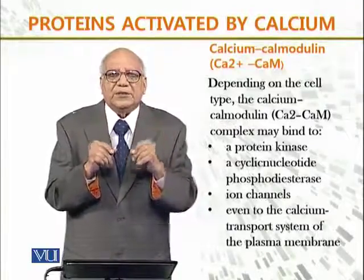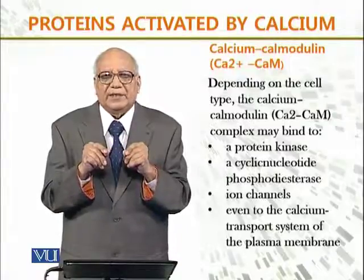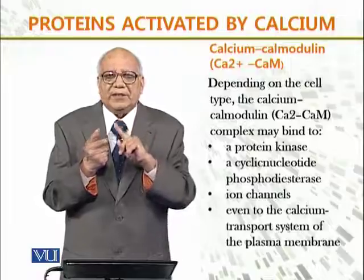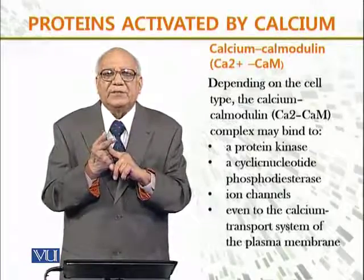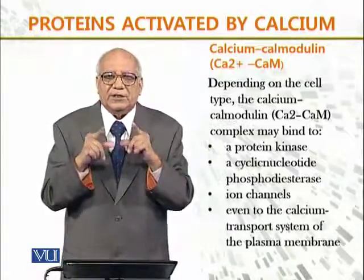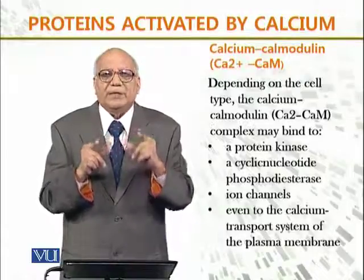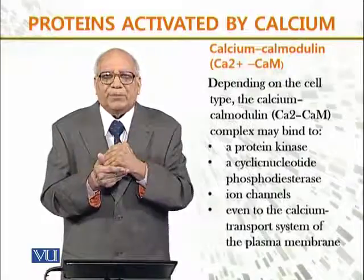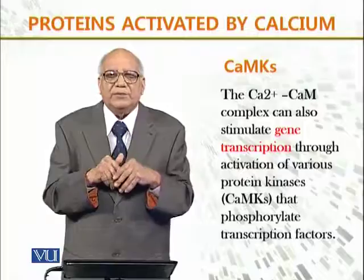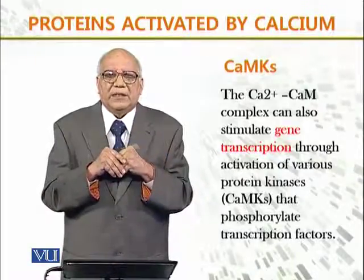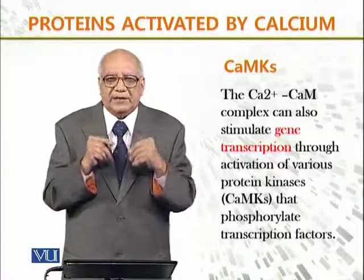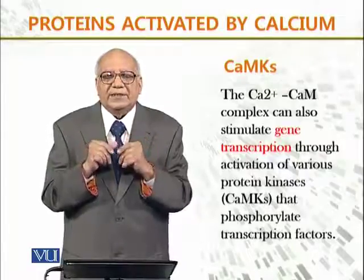Now the calcium-calmodulin structure depends on the cell type. The calcium-calmodulin complex can bind to a protein kinase, cyclic nucleotide phosphodiesterases, ion channels, and even to the calcium transport system of the plasma membrane — جو plasma membrane ہے cell کی، اس میں چونکہ calcium نے pass ہونا ہے تو it affects those as well. The calcium-calmodulin complex also stimulates gene transcription through activation of various protein kinases that phosphorylate transcription factors, and that indicates its importance and significance in cell signaling.